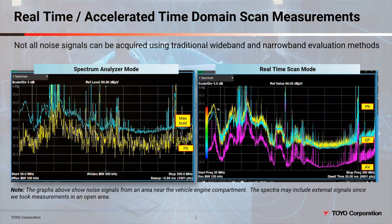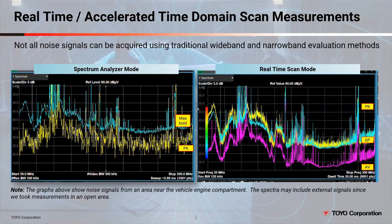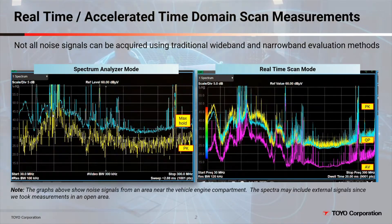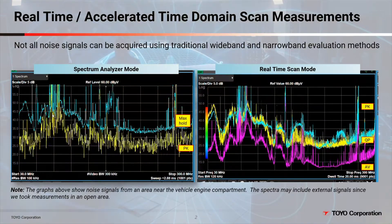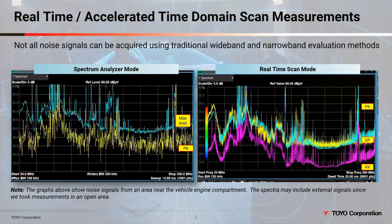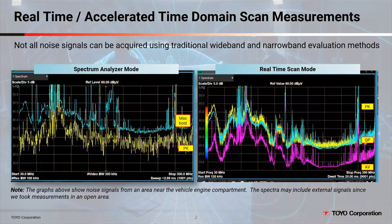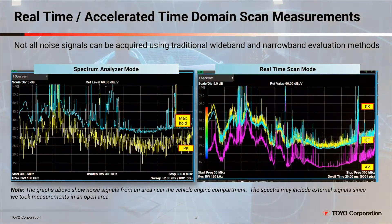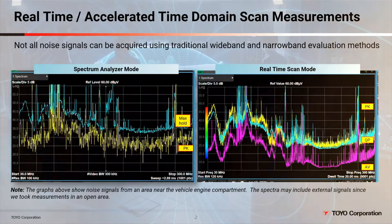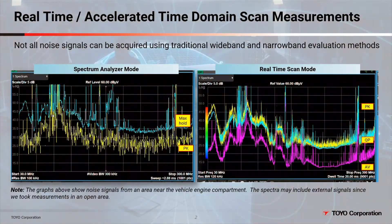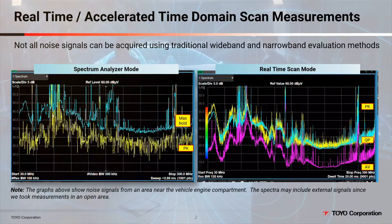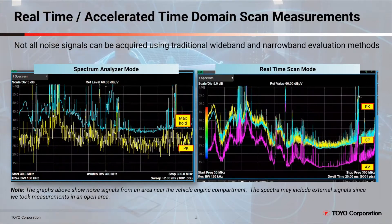We also took measurements using the traditional sweep method, represented by the graph on the left. You can see that it is difficult to capture instantaneous pulses. For many engineers, they determine the presence of noise by observing changes in the spectrum that appear for a moment in time. However, some noise may never appear on the spectrum — so even though noise may be present, you'll never see it. This highlights the inherent weakness of using traditional sweeps.